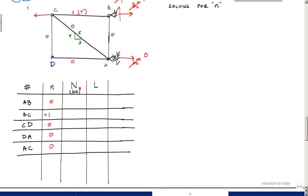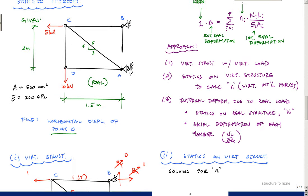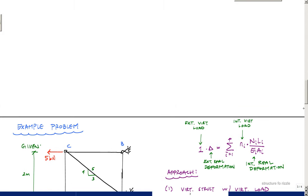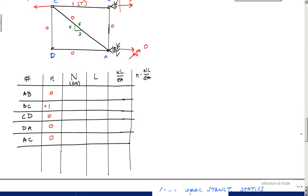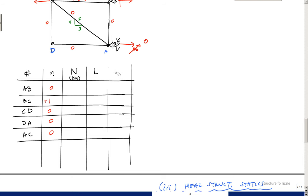The next columns in the table are the real internal force N due to real loading, and the length of each member. Normally you'd also compute n·N·L/EA for each member and sum that column. However, since EA is constant for all members in this problem — same cross-section and same material — we can factor out EA and just create a column of n·N·L, sum it up, and then divide by EA at the end.